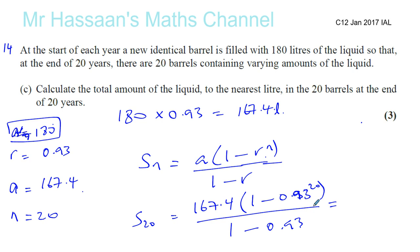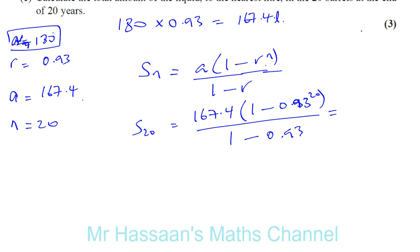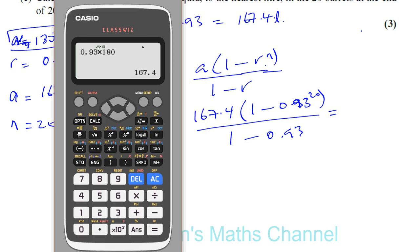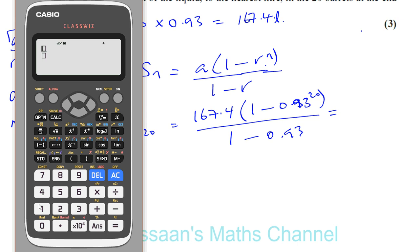Okay, so you can work out what that is, and that will be our answer. So I'm going to bring up the calculator. So we'll take our calculator, and we have 167.4. Let me just put it in a fraction form. So 167.4, and times 1 minus 0.93 to the power of 20. And we'll close the bracket, divided by 1 minus 0.93.